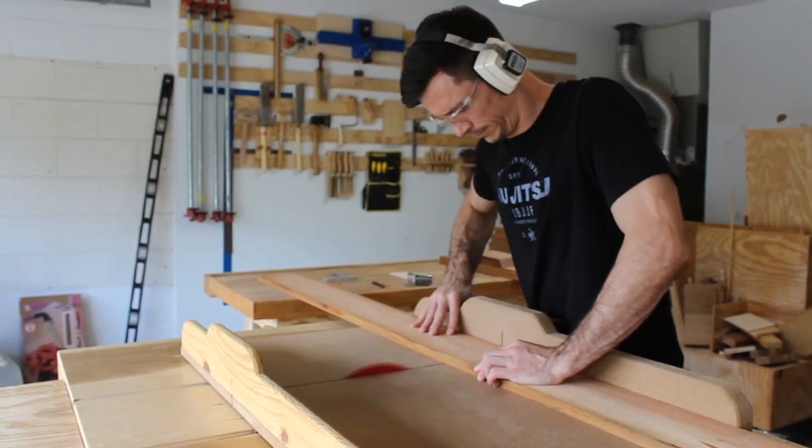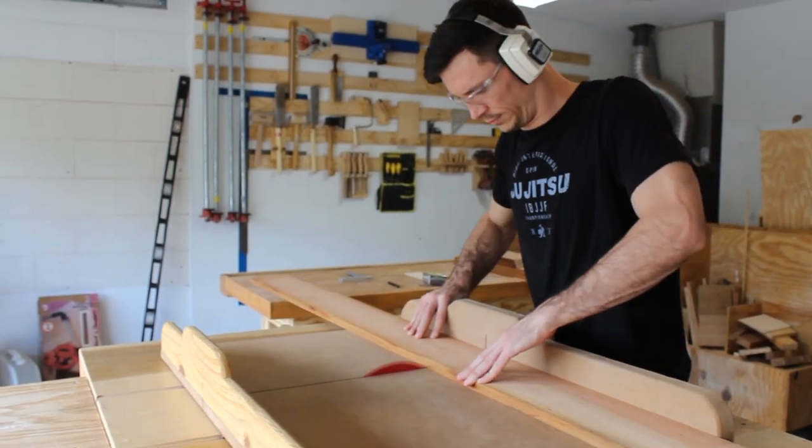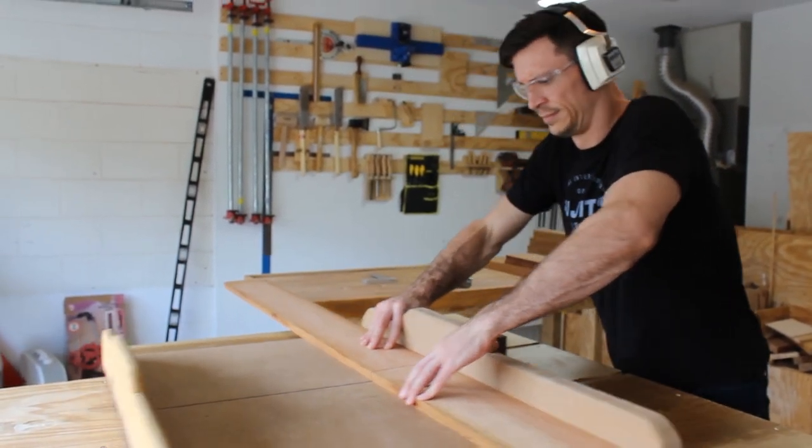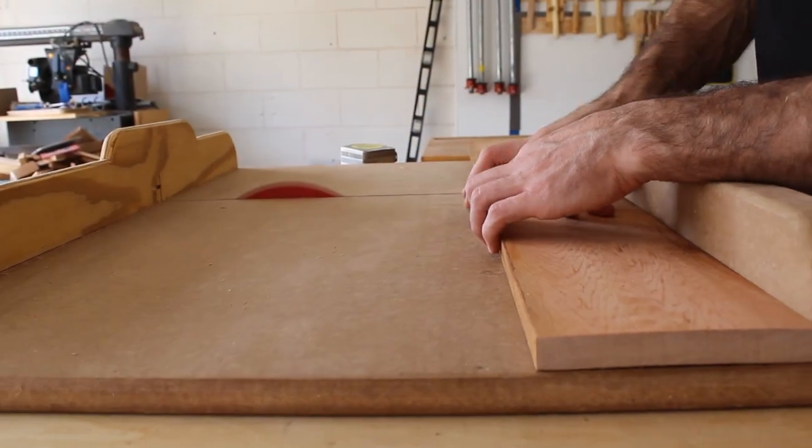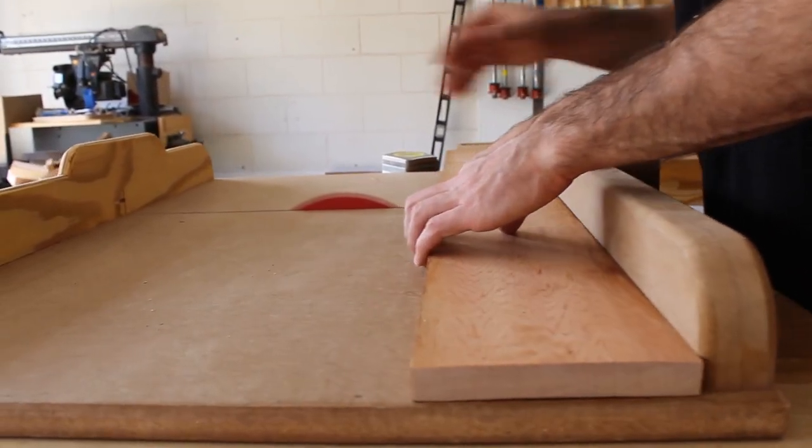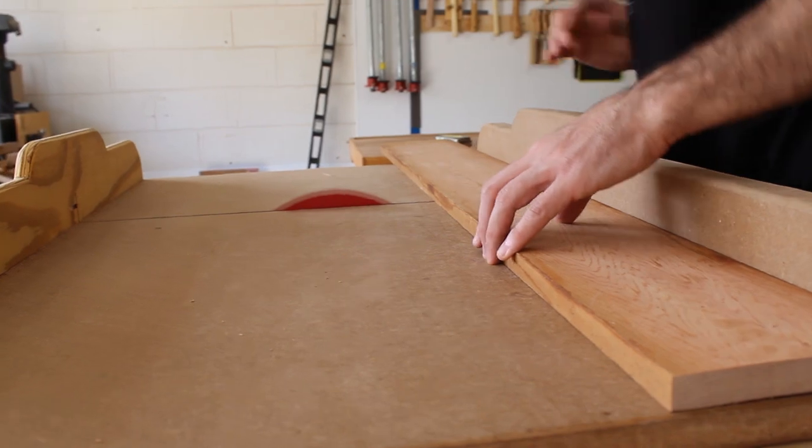I actually had to do a lot of these crosscuts twice because the initial board I was going to use was just too twisted. And since I don't have a planer or a jointer yet, I just headed back to the lumber rack, found a board that was easier to work with, and started over.